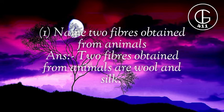Question number 1. Name two fibers obtained from animals. Answer: Two fibers obtained from animals are wool and silk.